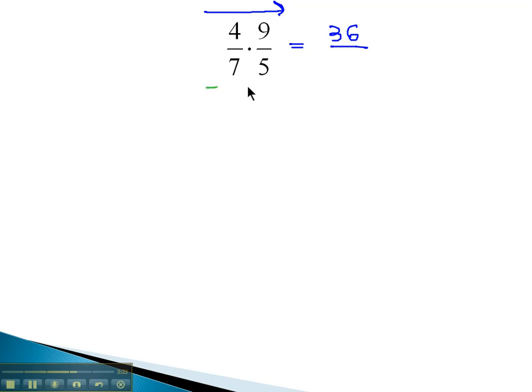Over, we can multiply across the denominators. 7 times 5 is 35. And we get our final solution, 36 over 35, simply by multiplying across the numerators and denominators.